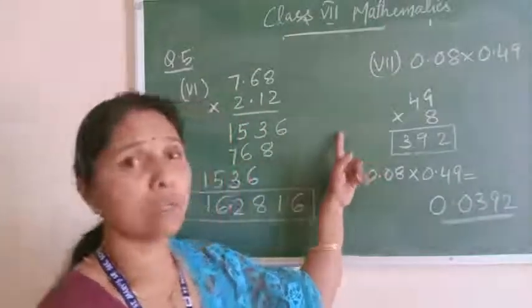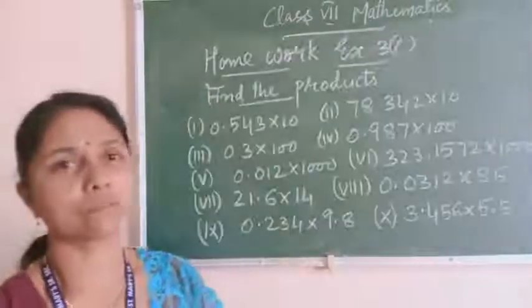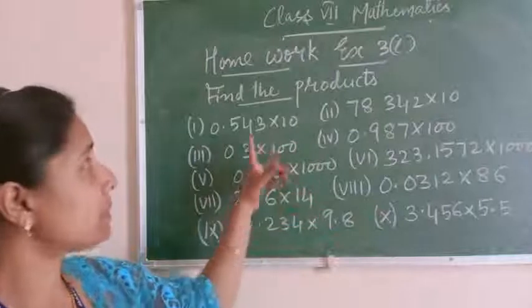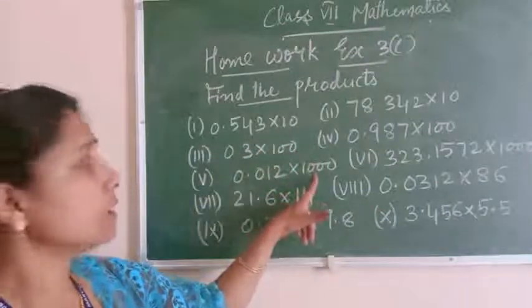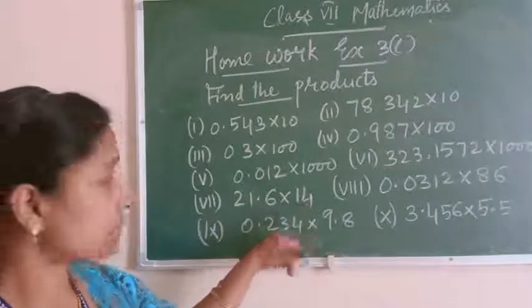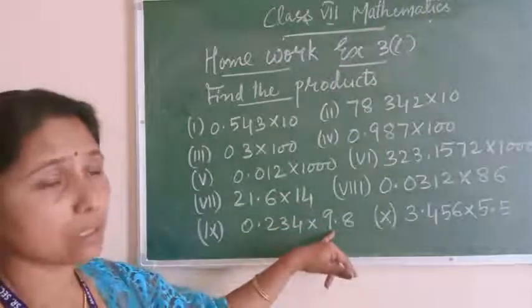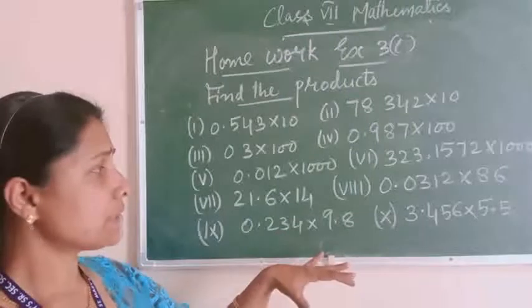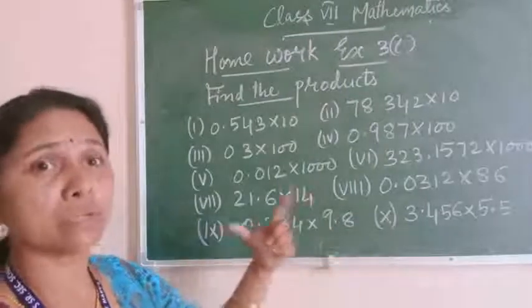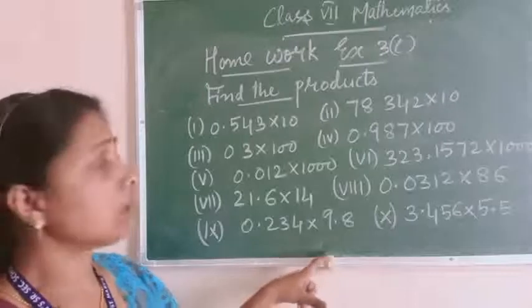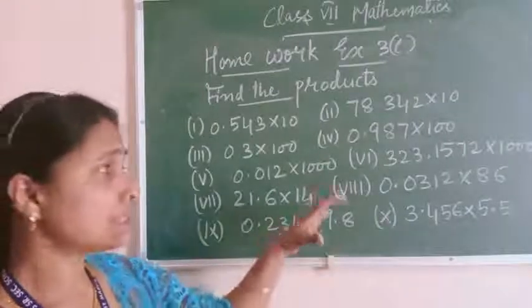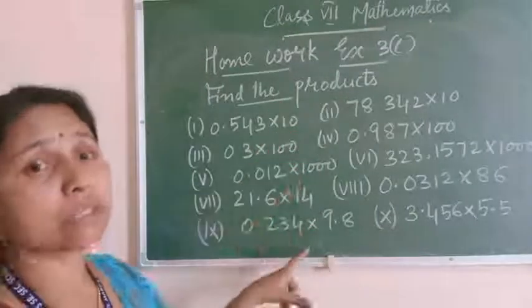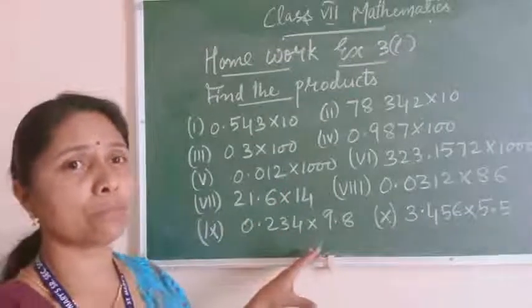Now see today's homework. Total 10 questions are given — all types: multiplication by 10, 100, 1000; multiplication of a decimal by a whole number; and multiplication where both numbers are decimals. These 10 questions you have to do in your notebook. Every class, whenever I give homework, I say which questions you have to do. Please listen to the class carefully and do accordingly. You have to do these 10 questions in your notebook. See you tomorrow. Bye.